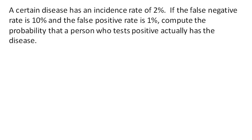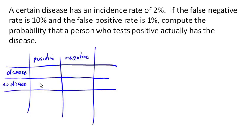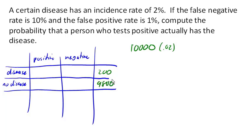Now we have another disease with an incidence rate of 2%, a false negative rate of 10%, and a false positive rate of 1%. Let's compute the probability that a person who tests positive actually has the disease. There are two ways to do this — let's start with the easy way by creating a table. Let's imagine 10,000 people. With a 2% incidence rate, 200 of them will have the disease and 9,800 will not.